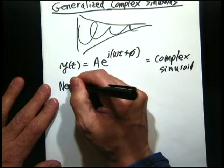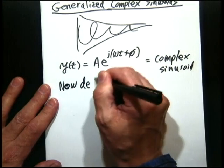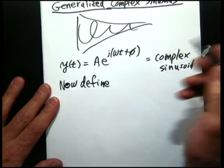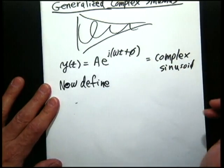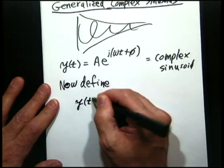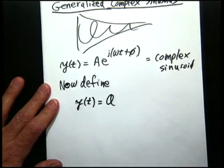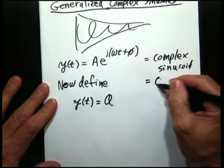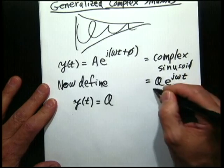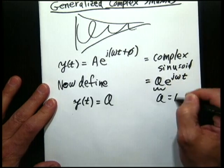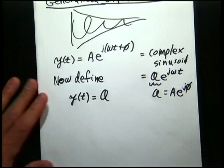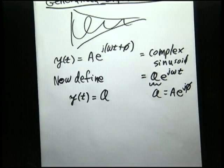Now, we're going to generalize this. Now define some complex number. Let me just write that in a complex amplitude form, where script A is A e to the j phi. It's just a little more compact to put the amplitude and the phase in a single complex number.